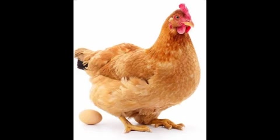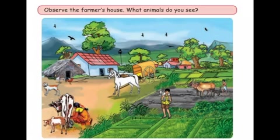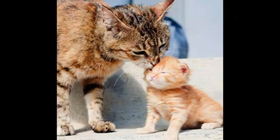Animals are of different kinds. Some live with us in our farm and homes. Some live in the forest and some in water. Now observe the farmer's house — Cow, Dog, Horse, Goat and Ox. These animals are found in and around our homes. We take care of them and they help us in various ways. Such animals are called Domestic Animals.